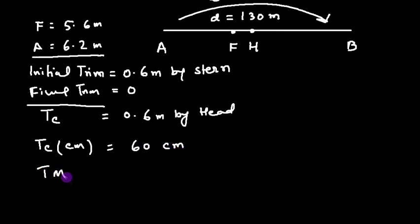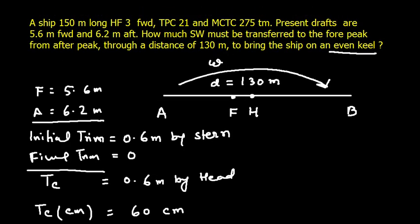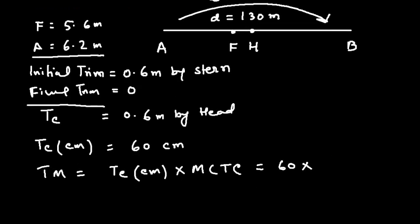We know it very well, the trimming moment is nothing but TC in centimeters into MCTC. So TC is 60 and MCTC is given as 275. So let's work: 60 into 275 is equal to 16,500 ton-meters, because this is the moment, and this is going to be by head.